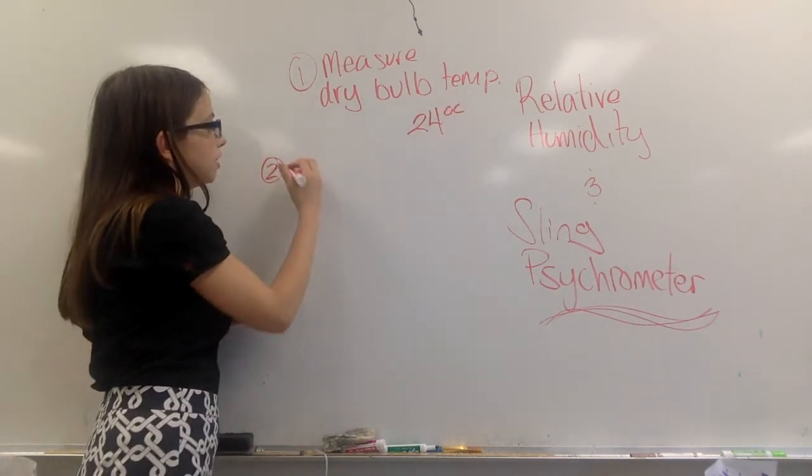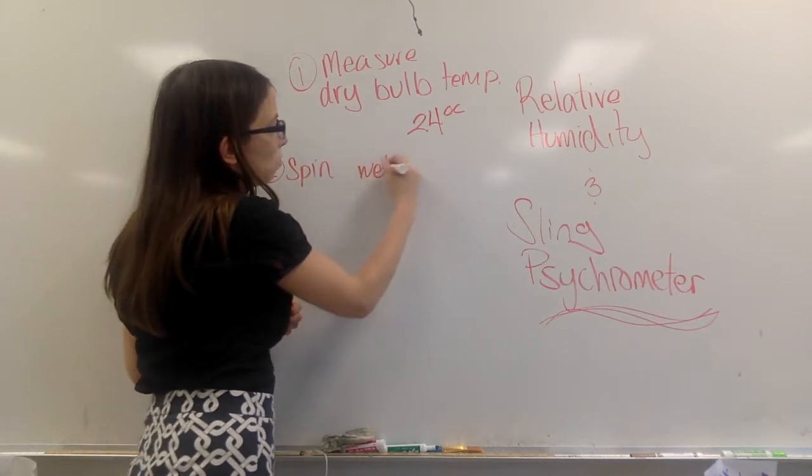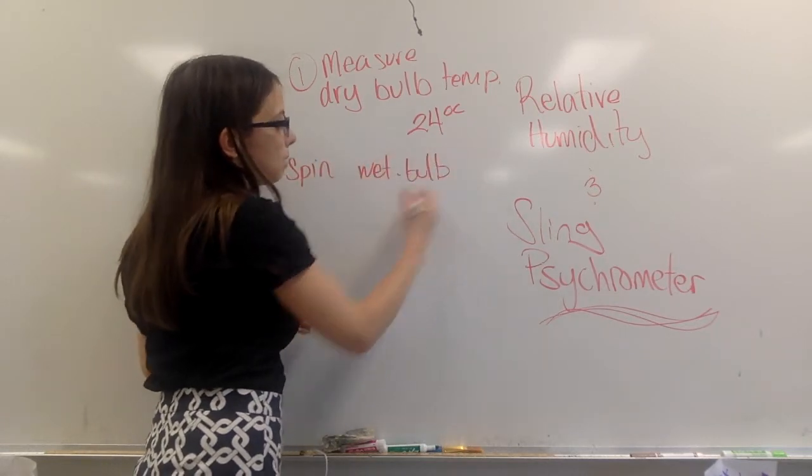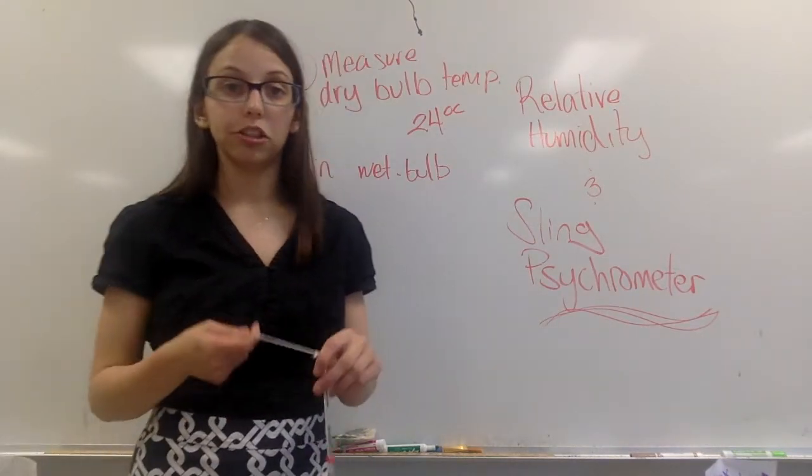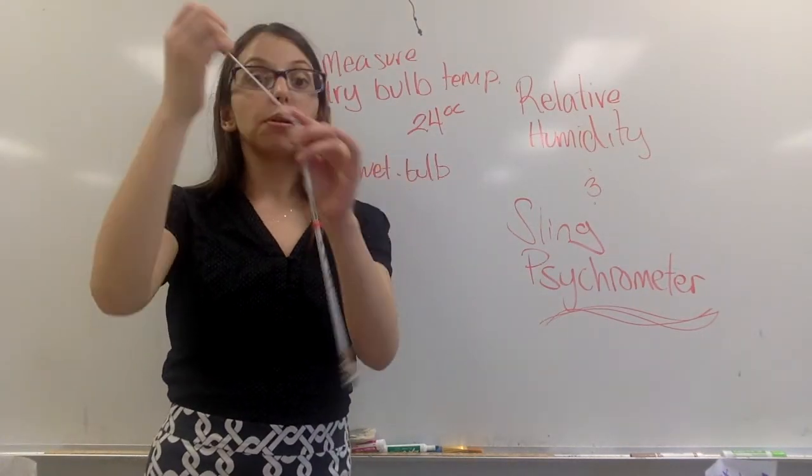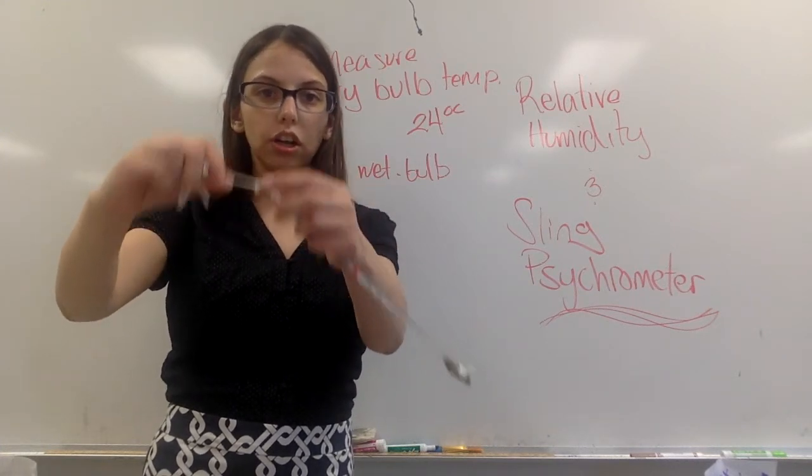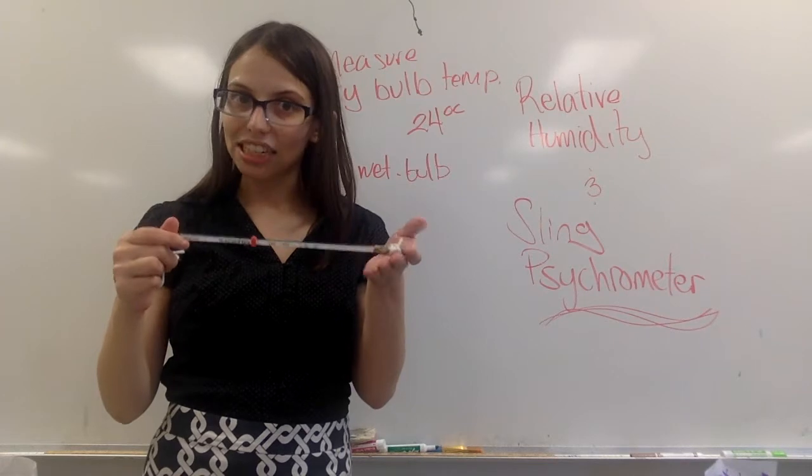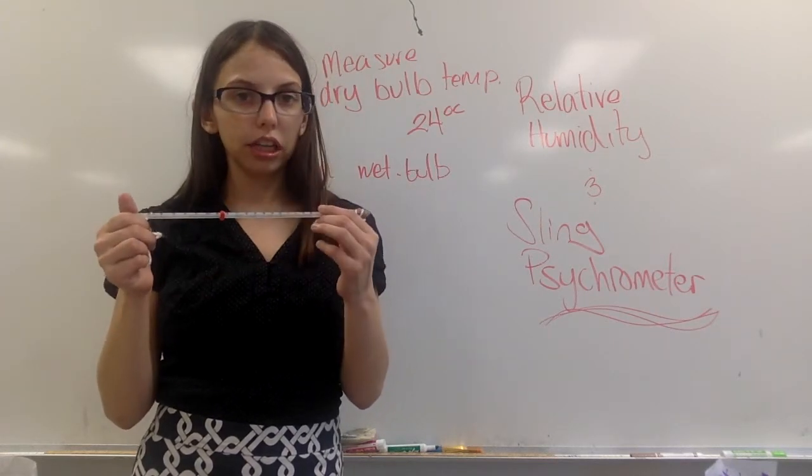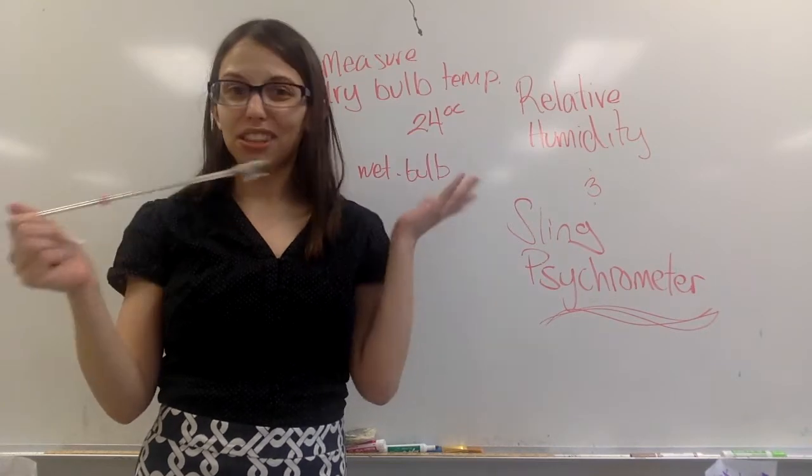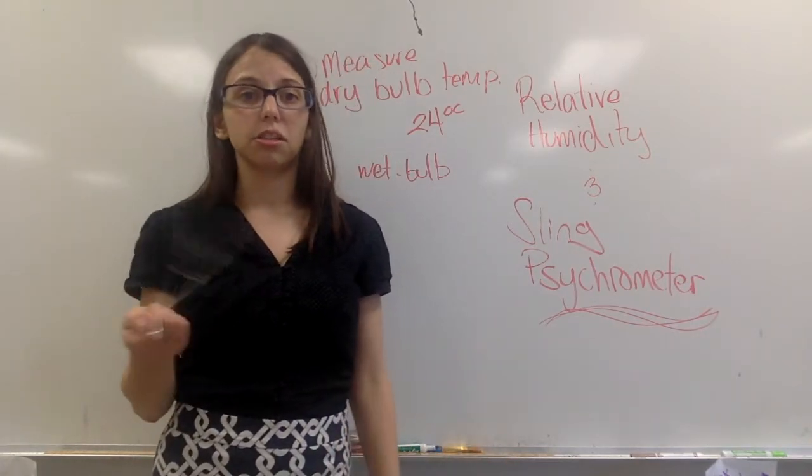All right, step two, the fun step, you are going to spin your wet bulb thermometer. All right, what I mean by spin, and I'll explain why we're doing this as I demonstrate. Take it, hold it by the string, please, please make sure this is attached securely. You don't want this to fly off because these are glass instruments. They don't have mercury in them, it's a different medium, but still you don't want broken glass. So you just take it and you just start spinning it like that.